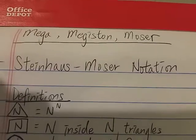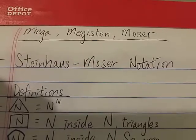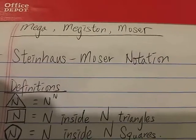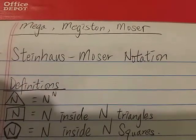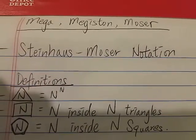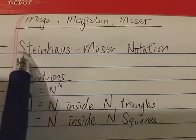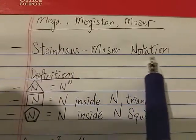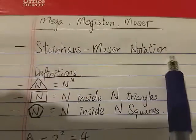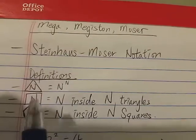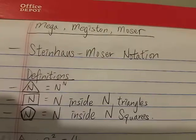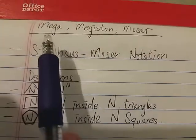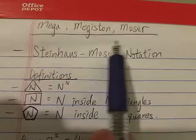These three numbers are not as well known as the Googol, Googolplex, and Graham's number. They came from the Steinhaus-Moser notation, which is a notation for expressing certain extremely large numbers, such as these three.